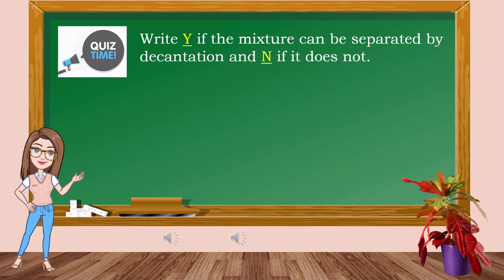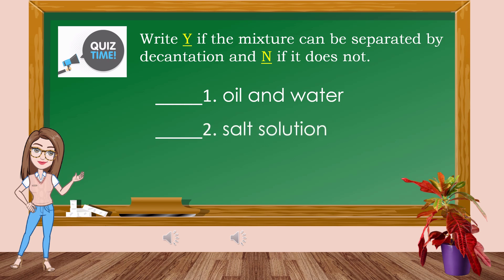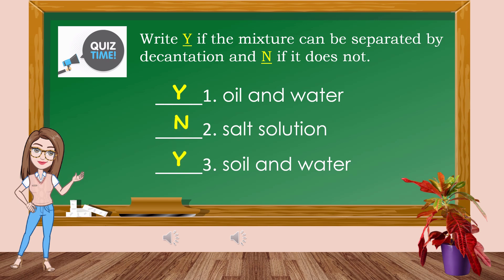Let's proceed to the next quiz. Write Y if the mixture can be separated by decantation and N if it cannot. Number 1: Oil and water. Number 2: Salt solution. Number 3: Soil and water. The answer for number 1 is Y, number 2 is N, and number 3 is Y.